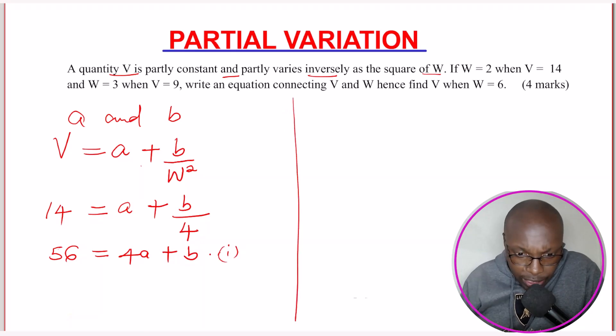So after getting that equation, we can go to the other one now. And W is 3 when V is 9. So V is 9. Do the substitution. V is 9. Then constant is there. Plus B is constant. Then W is 3. W is 3. So W squared is 3 squared, which is 9.